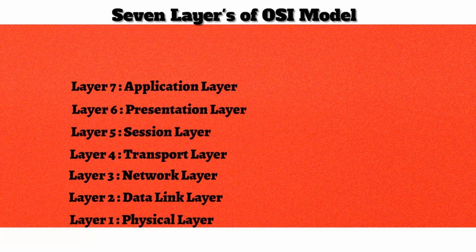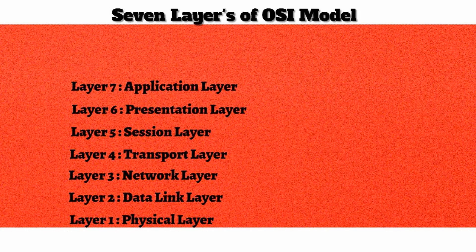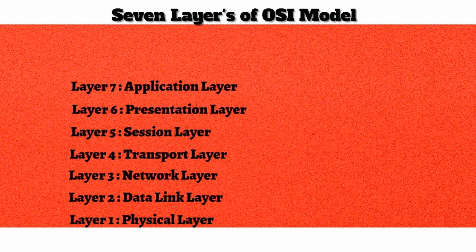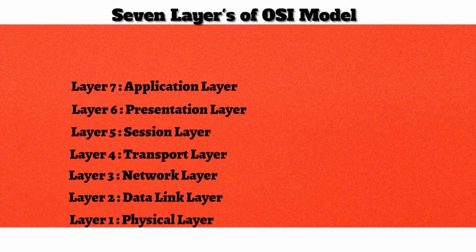Here are two popular memory aids. Starting at layer 7 going down, remember the acrostic: 'All people seem to need data processing' — where A in All reminds us of Application, P in People reminds us of Presentation, and so on down to D in Data for Data Link. If you want to memorize from the bottom up starting at layer 1, remember: 'Please do not throw sausage pizza away' — where P in Please reminds us of Physical, and D in Do reminds us of Data Link.